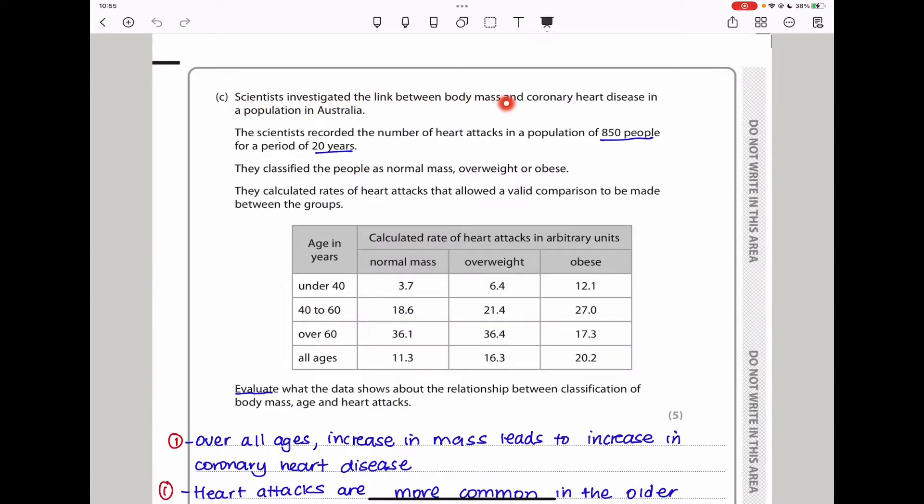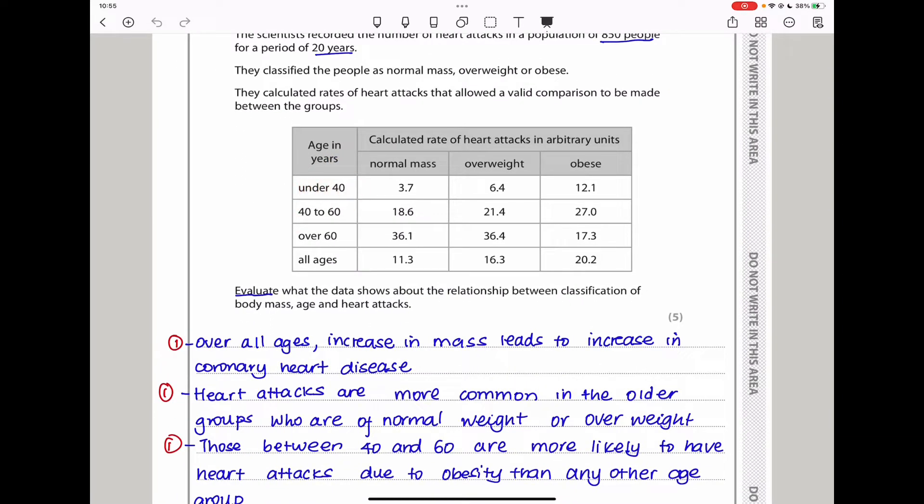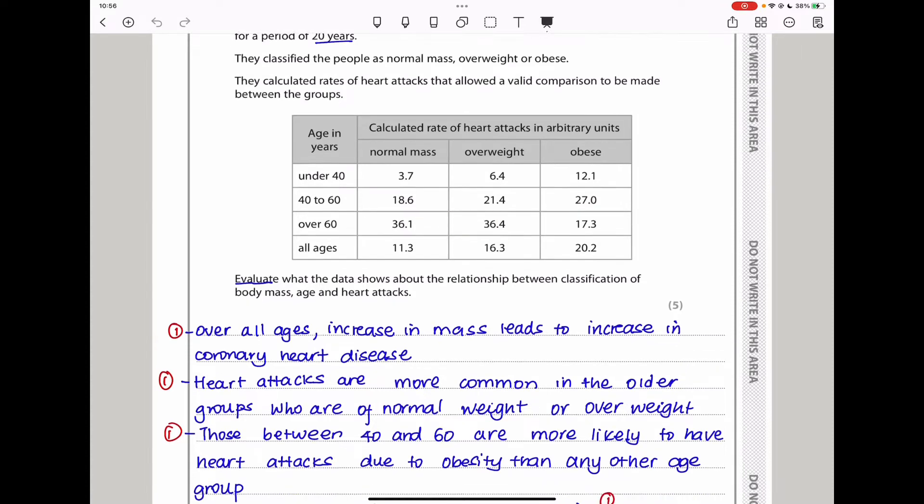Here they say, scientists investigated the link between body mass and coronary heart disease in a population in Australia. The scientists recorded the number of heart attacks in a population of 850 people for a period of 20 years. They classified the people as normal mass, overweight, or obese. And they calculated rates of heart attacks that allowed a value comparison to be made between the groups. The groups we have are ages under 40, those between 40 and 60, those over 60, and all ages. We can see that for all ages, as mass increases, there is a higher chance of heart attacks.